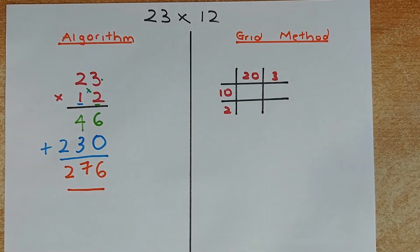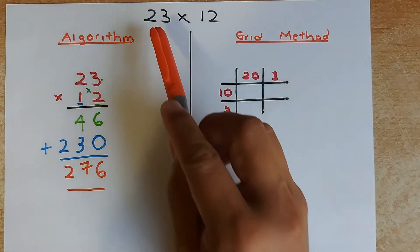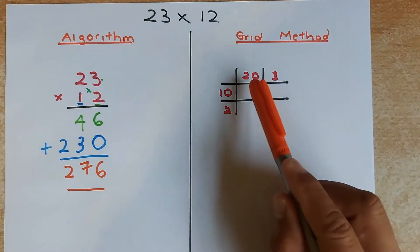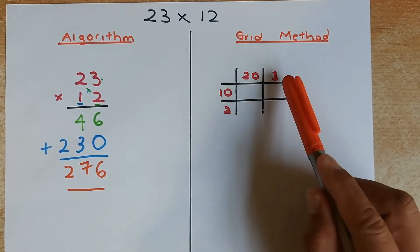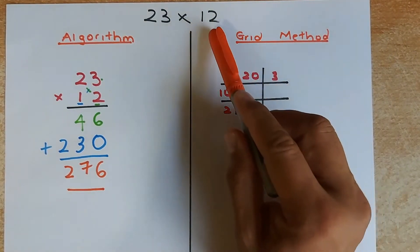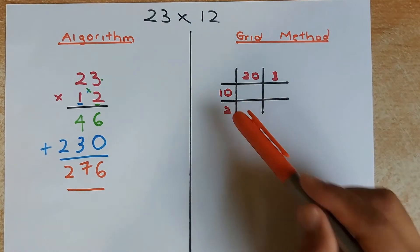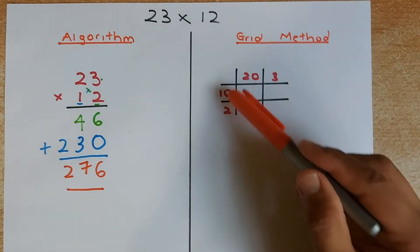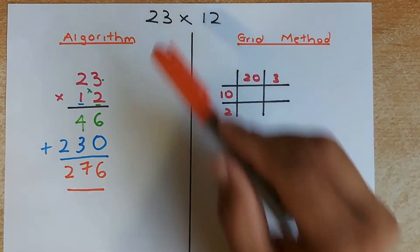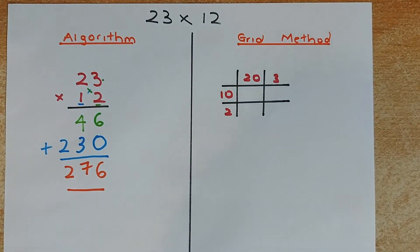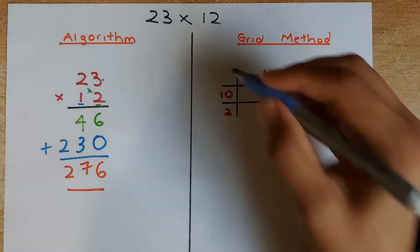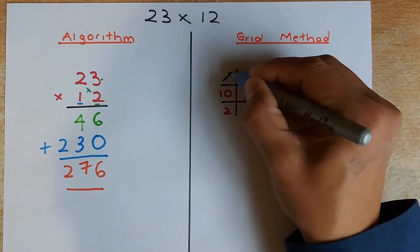Now we are going to do the grid method. The grid method for 23 times 12 — you are going to break up 23 into 20 and 3, and 12 will be 10 and 2. So 10 plus 2 is 12, and 20 plus 3 is 23. So what you are going to do, you are going to multiply them in the box here.